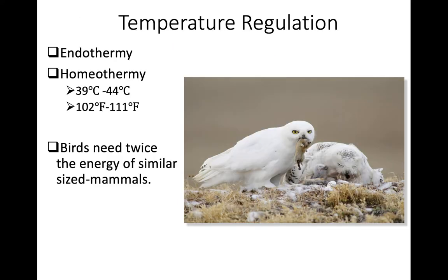Birds have really high metabolism. They are endothermic, so they have the ability to physiologically generate high body heat, and they use that and other mechanisms to maintain homeothermy — a relatively stable body temperature. The body temperature of birds is really high compared to mammals: 39 to 40 degrees Celsius, or 102 to 111 degrees Fahrenheit. What is normal for a bird would be a dangerous fever for us.